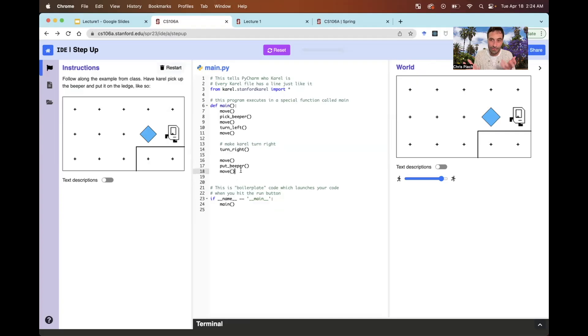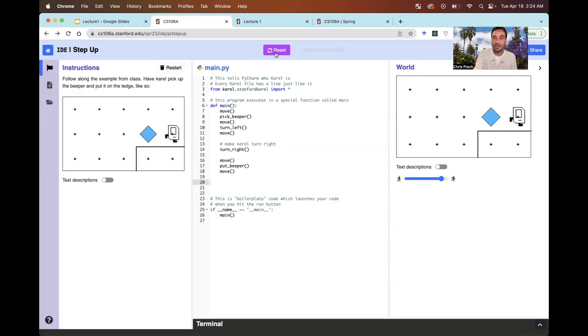Because Carol doesn't know what a turn right is. But I'm about to teach you this critical concept, which is you can define new commands. So Carol doesn't know turn right. And in fact, if I try and run this program, I get an error that says there's no function called turn right.